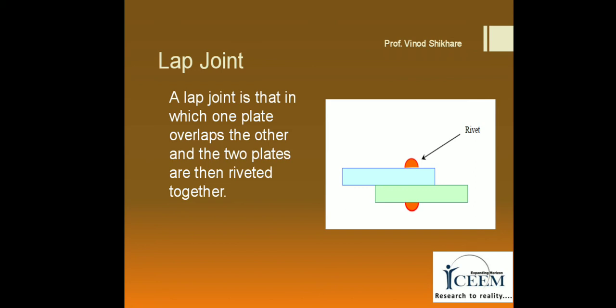Depending upon the number of rows, riveted joints may be classified as single riveted lap joint or double or triple riveted lap joint. When multiple rows are used, the arrangement of rivets between two neighboring rows may be of two kinds. In chain riveting, the adjacent rows have rivets in the same transverse line. In zigzag riveting, on the other hand, the adjacent rows of rivets are staggered.